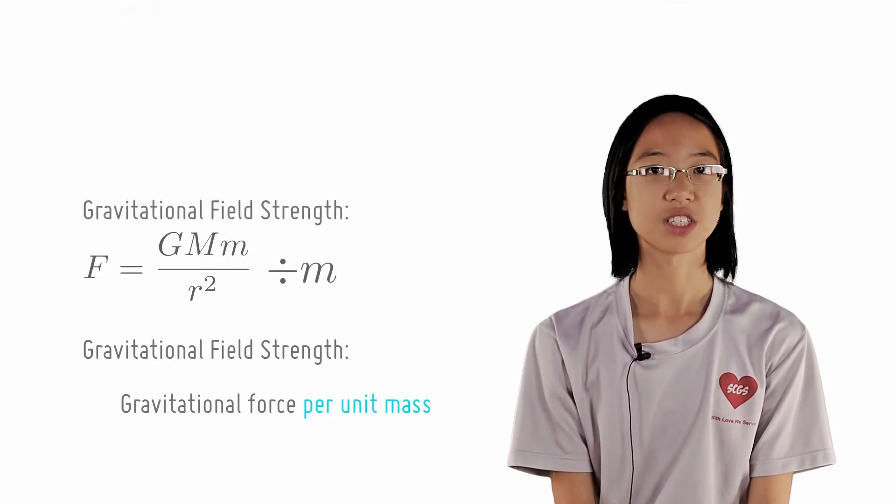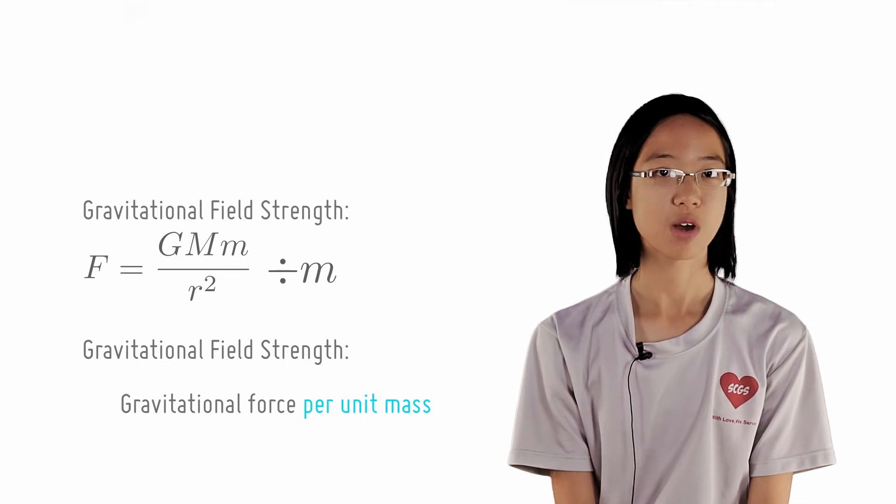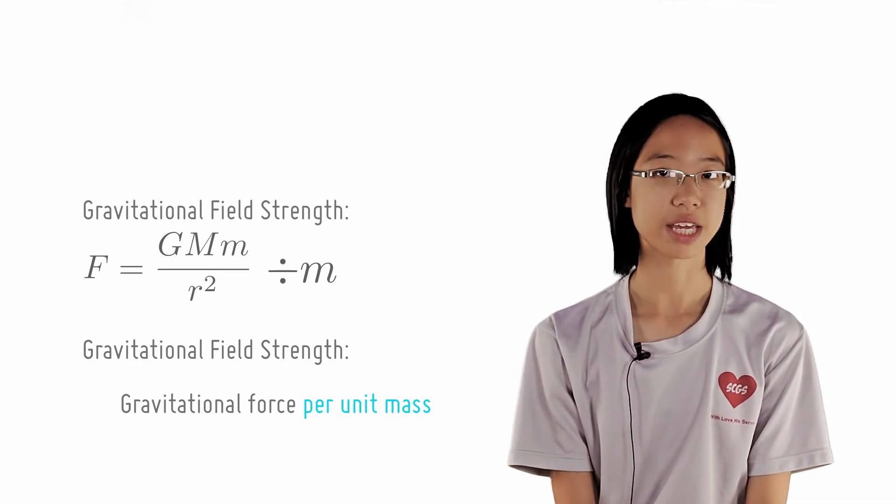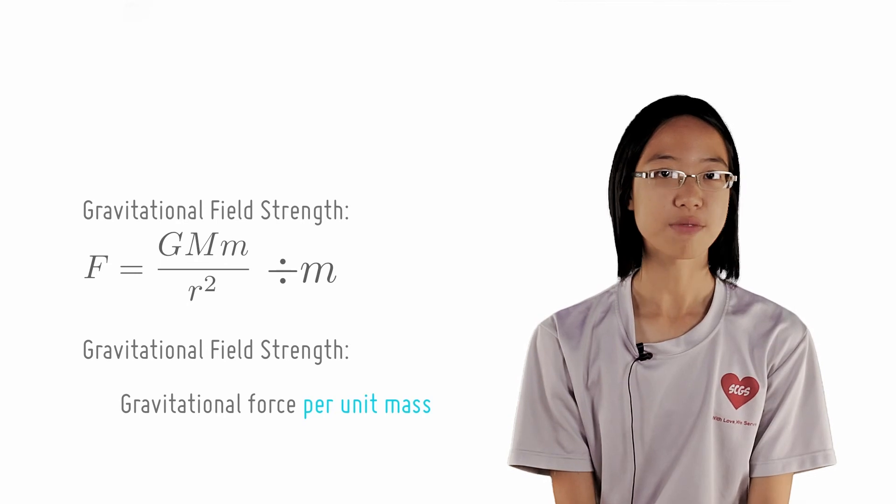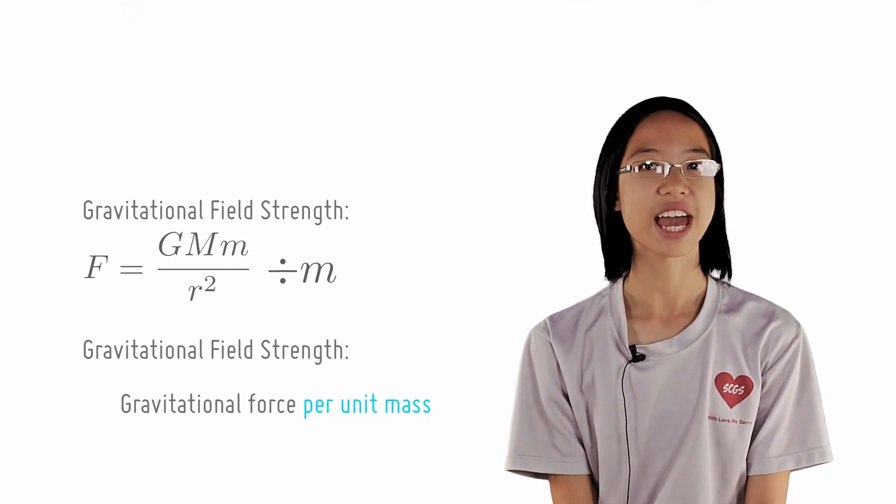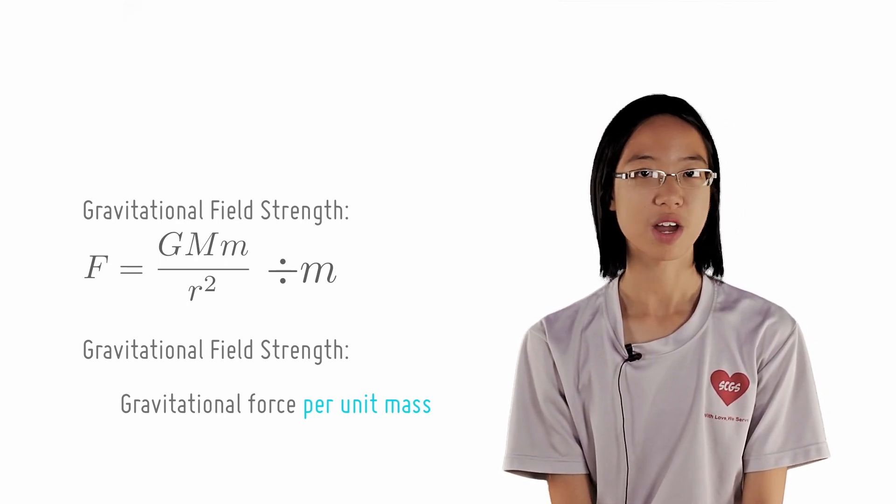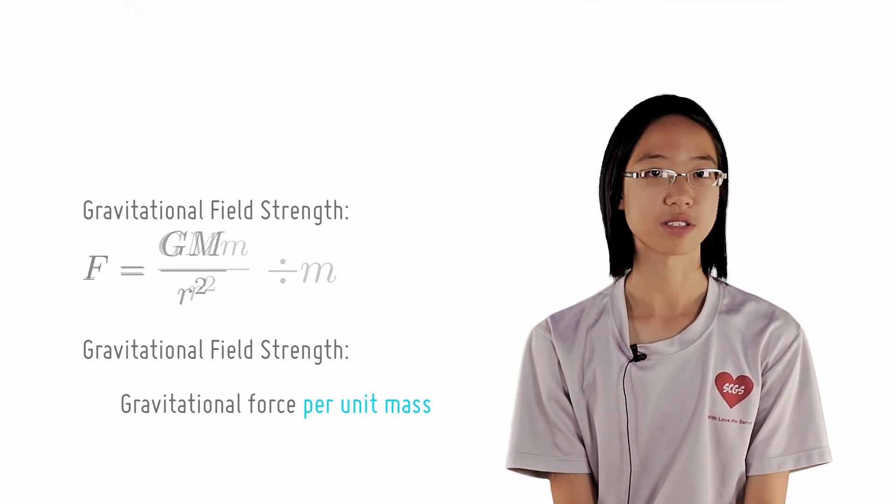In other words, g equals F over m, where the SI units of g would be newtons per kg. So if we were to replace F with GMm over r squared, we can deduce that g equals GM over r squared.